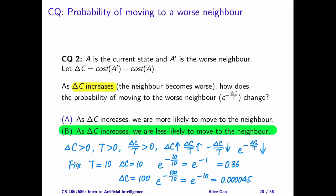Similarly, we can also solve question 2 mathematically. Delta C is positive, T is positive, therefore the fraction delta C divided by T is positive. If we increase delta C, then the fraction delta C divided by T increases. The exponent, which is the negative of the fraction, decreases. So the probability decreases because the exponential function is an increasing function.